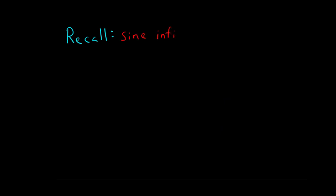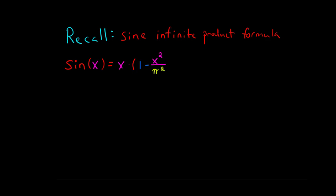In order to prove this identity, we need to recall one of the results which we developed in one of our earlier videos, which is the sine product formula. The sine infinite product formula states that sine invests as an infinite product, namely the product of x times (1 minus x squared over pi squared) times (1 minus x squared over 4 pi squared) times (1 minus x squared over 9 pi squared) and so on — it's an infinite product.